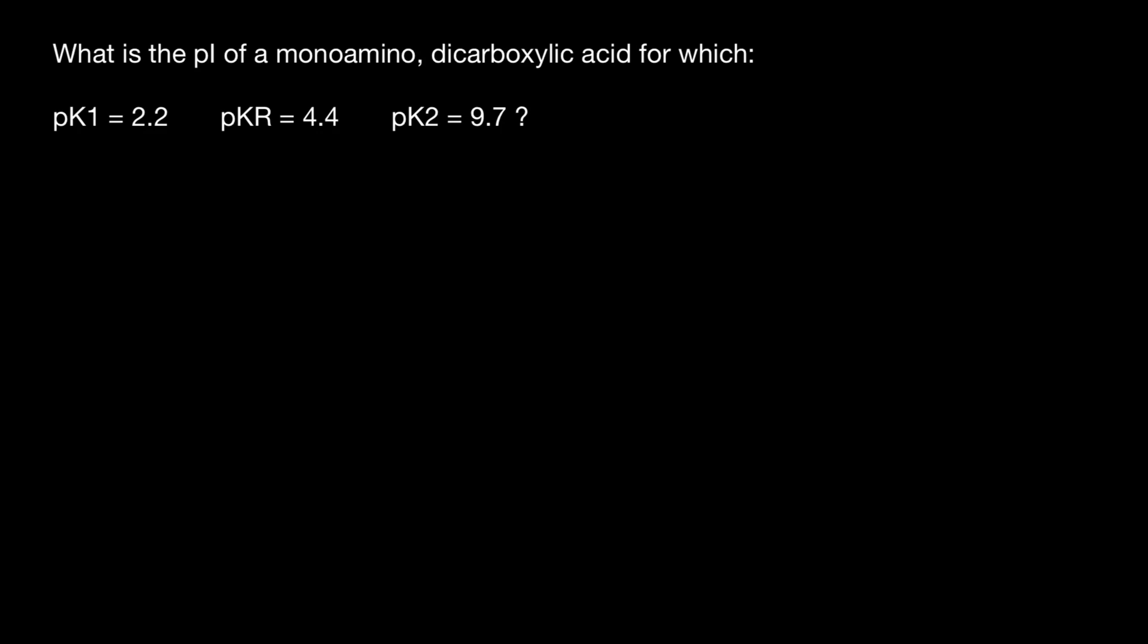Hello and welcome to Nikolai's genetics lessons. If you study biology or genetics, you may get such a question on your exam: What is the isoelectric point for a monoamino dicarboxylic acid for which pK1 = 2.2, pKR = 4.4, and pK2 = 9.7?